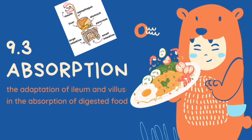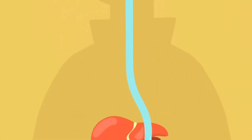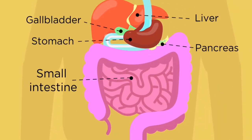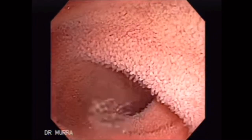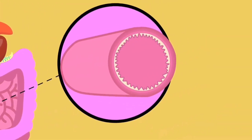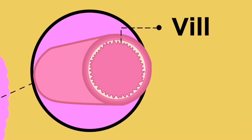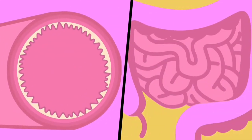Simple molecules produced from digested food are absorbed in the ileum. The ileum is already adapted to the absorption of digested food because its internal layer is folded and covered by tiny projections called villi. The villi has a few characteristics which allows it to adapt to the absorption of nutrients.